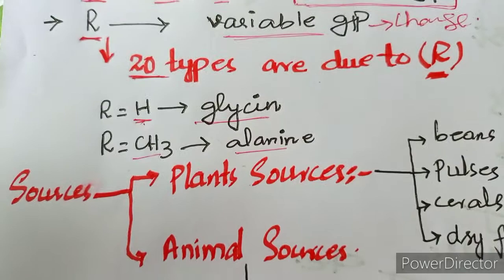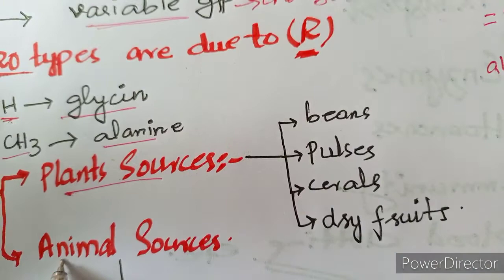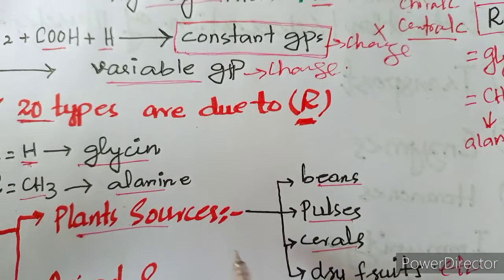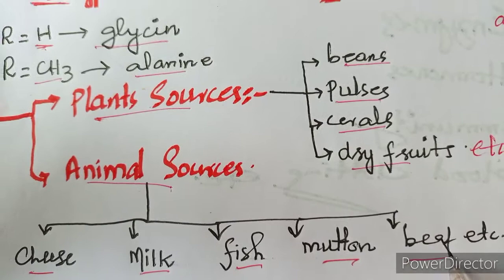The sources of proteins are of two types: plant sources and animal sources. Plant sources include beans, pulses, cereals, dry fruits, vegetables, etc. Animal sources include cheese, milk, fish, mutton, beef, etc.